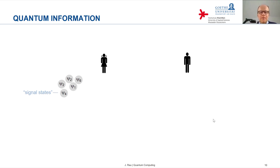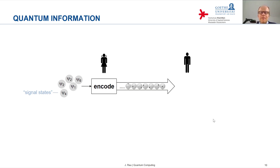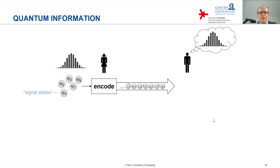These are also called the signal states. Now Alice wants to send to Bob these quantum signal states via a quantum channel using qubits. As in the classical setting, the probability distribution with which the various signal states are produced is given and is known also by Bob.